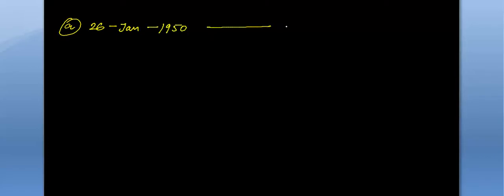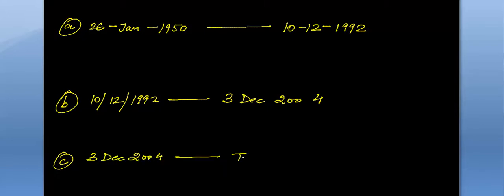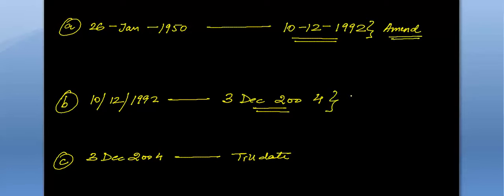Here we will have some cases. Case A: if you are born between 26th January 1950 to 10th December 1992. Case B: from 10th December 1992 to 3rd December 2004. Case C: from 3rd December 2004 till date. These dates exist because amendments took place — an amendment was brought in 1992 and another in 2003 — so we restrict the dates accordingly.